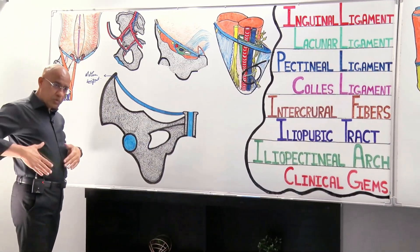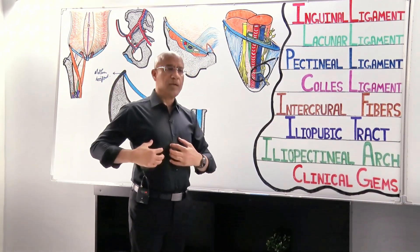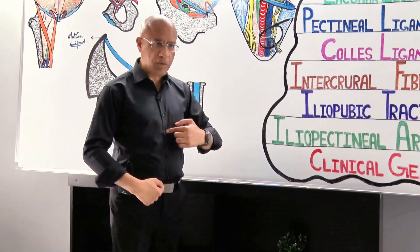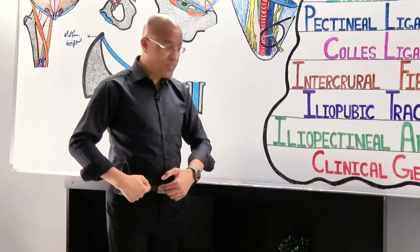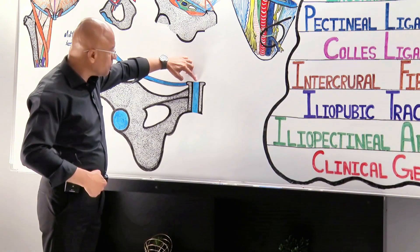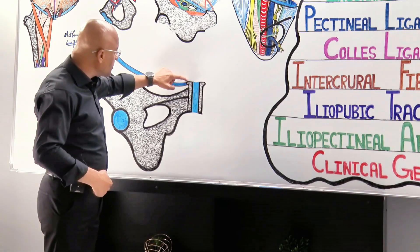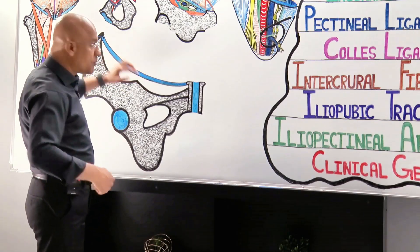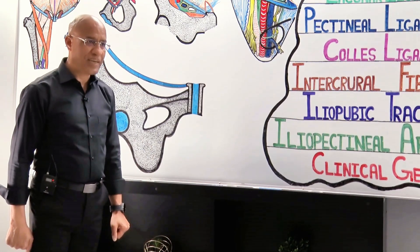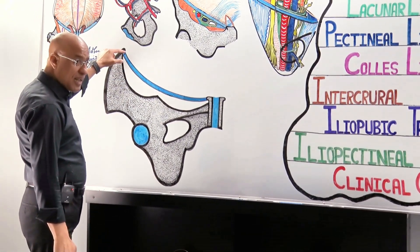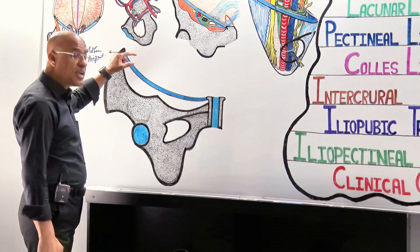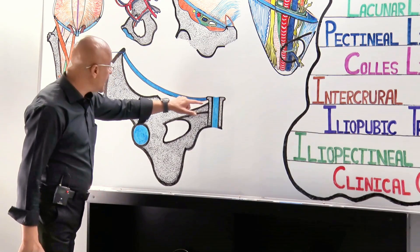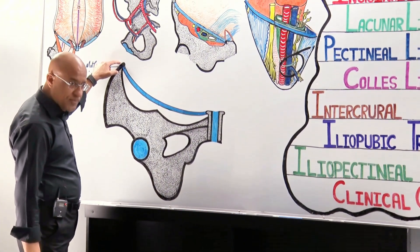The broad tendon coming down attaches at the xiphisternum, linea alba, symphysis pubis, pubic crest, and pubic tubercle. From the pubic tubercle, it is freely hanging — this is the free lower end of the external oblique aponeurosis, dangling. This inferior free end is medially attached to the pubic tubercle and laterally attached to the anterior superior iliac spine.